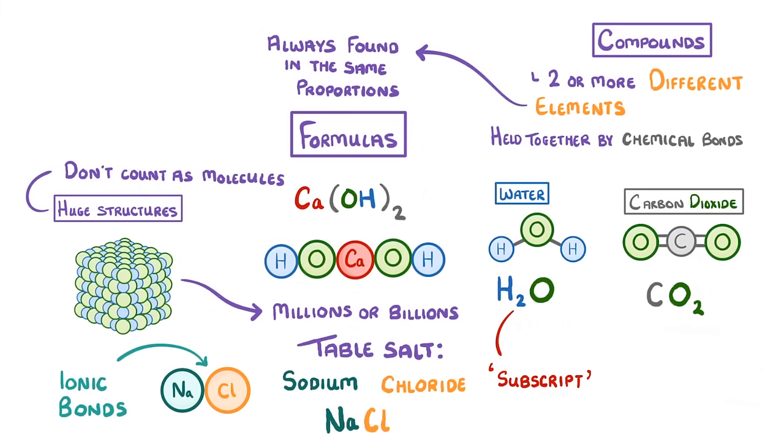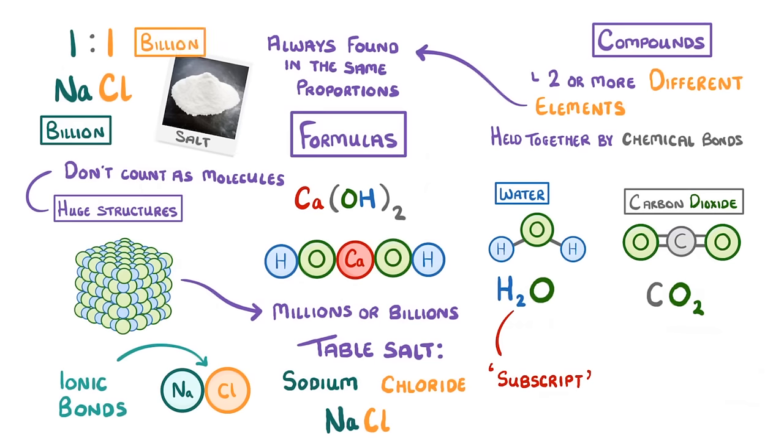The formula for these non-molecular compounds, though, is still important. It just acts as more of a ratio. For example, with sodium chloride, we can see that sodium and chloride are in a 1 to 1 ratio. So if a crystal of salt contained 1 billion sodium ions, it would also contain 1 billion chloride ions.